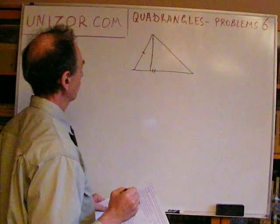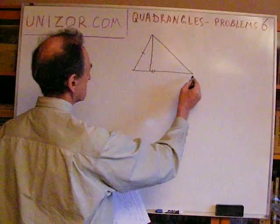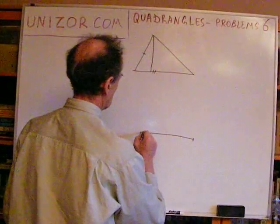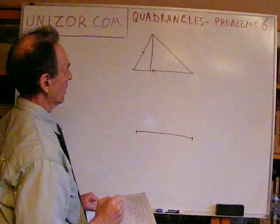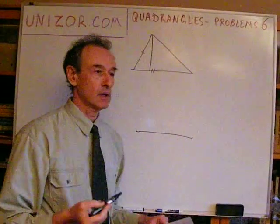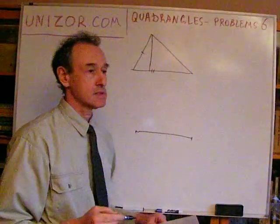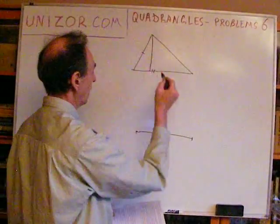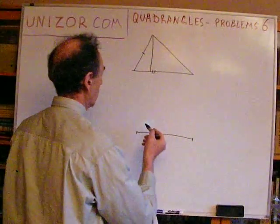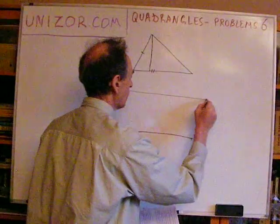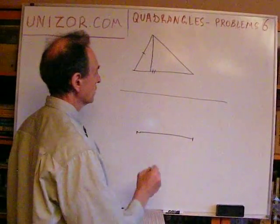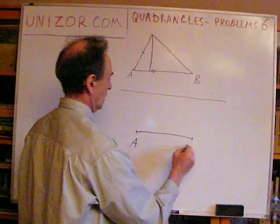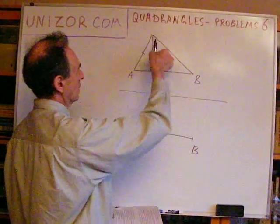Let's do it this way. Since we know this side and an altitude, first let's put this side somewhere on the plane. And now let's build a locus of all the points which can serve as the third vertex of the triangle with this base and given altitude. All these vertices are located on a line parallel to our base and at a distance equal to the altitude.